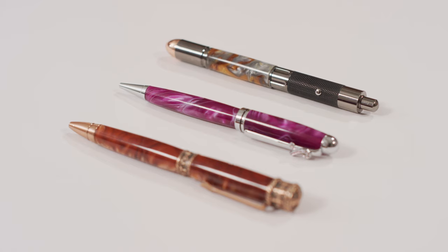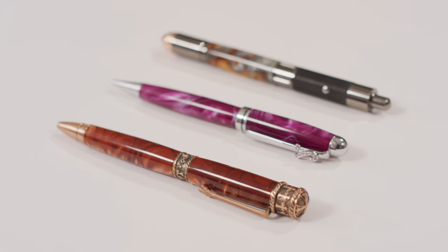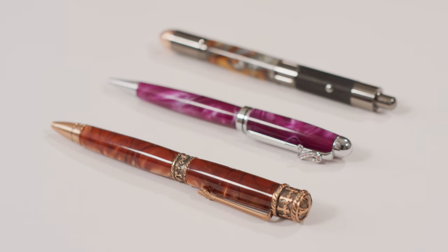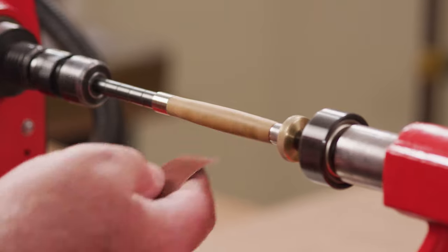Even the best turned pens don't sparkle without the perfect finish. Master these six tips and you'll be on your way to pens that shine. Sanding through the grits with the lathe running will result in circular sanding marks on the blank.